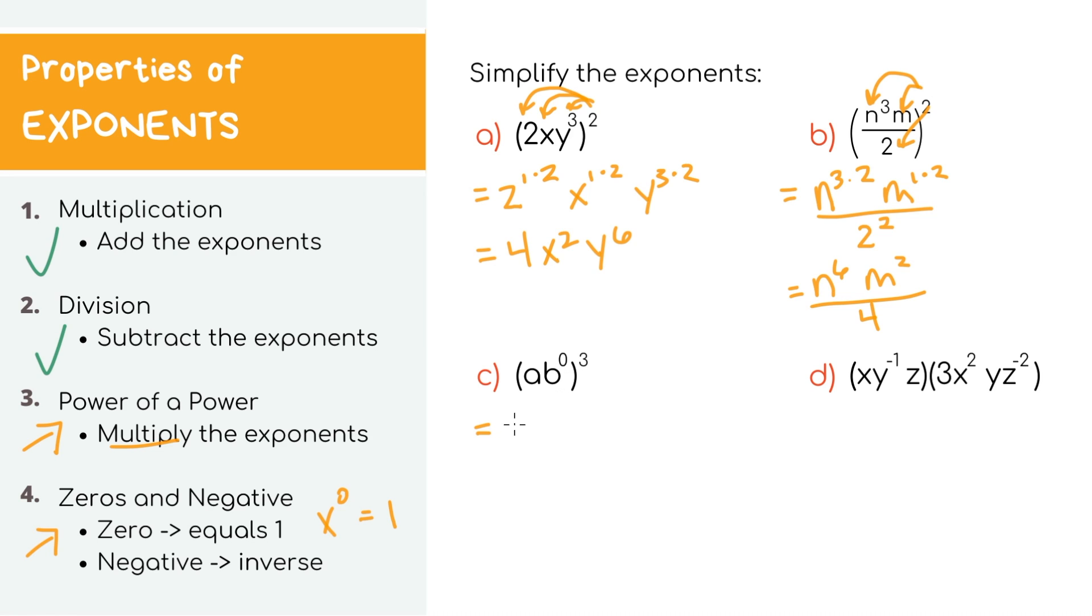So technically, this is just a times 1, all raised to the power of 3. Anything times 1 is just itself, so we have a to the third. And just simplifying here, I'm going to get rid of the parentheses. That's our final answer.